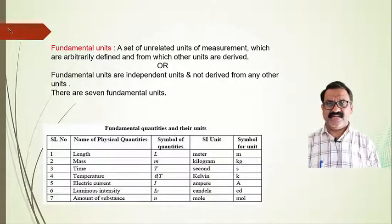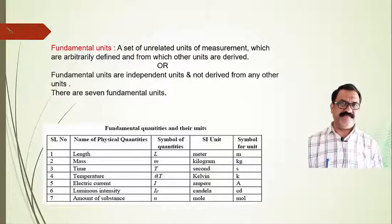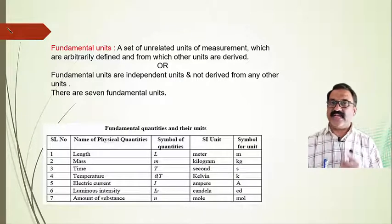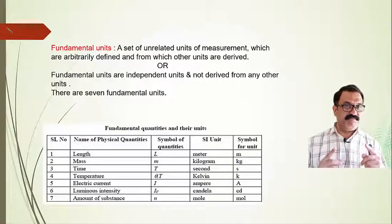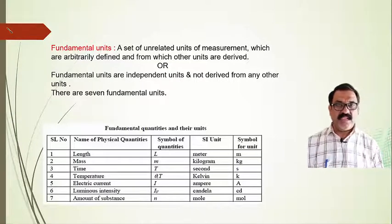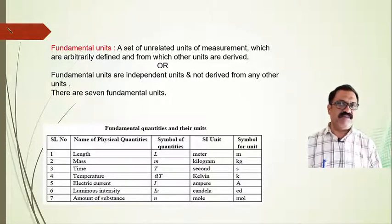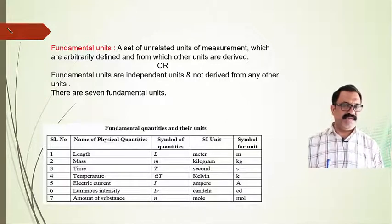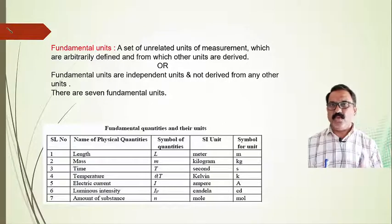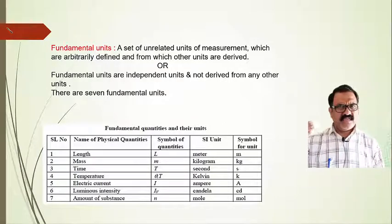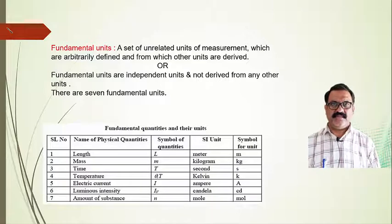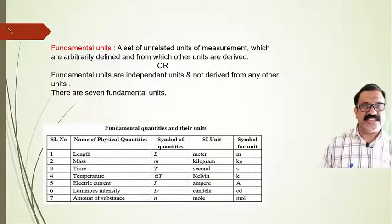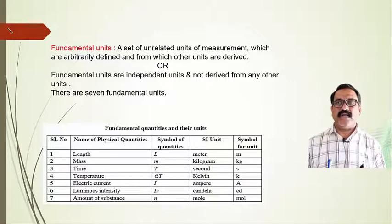Luminous intensity — the intensity of light — is measured in candela (cd). Candela is the fundamental unit for luminous intensity. The amount of a substance is measured in mole. Mole is a very important unit for chemistry, used to determine or calculate the amount of a substance. These seven units are independent; they cannot be derived with the help of any other unit, and hence they are called fundamental units.